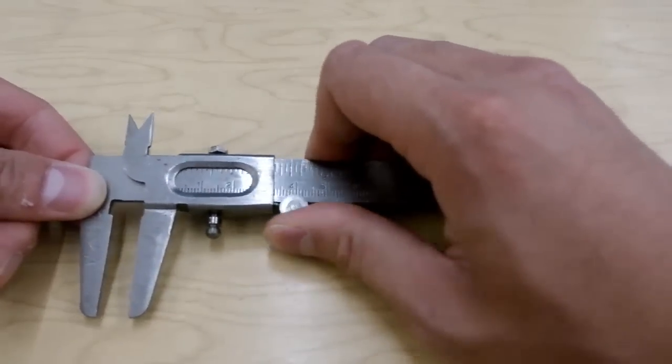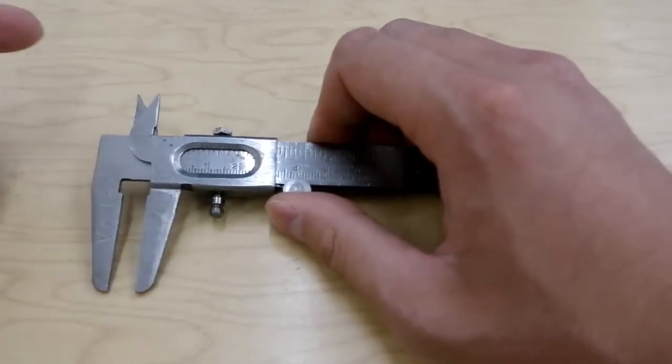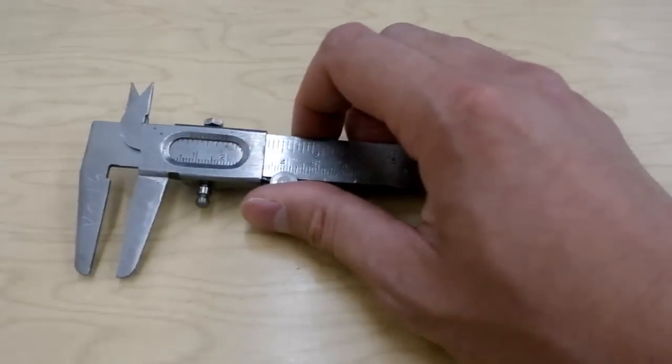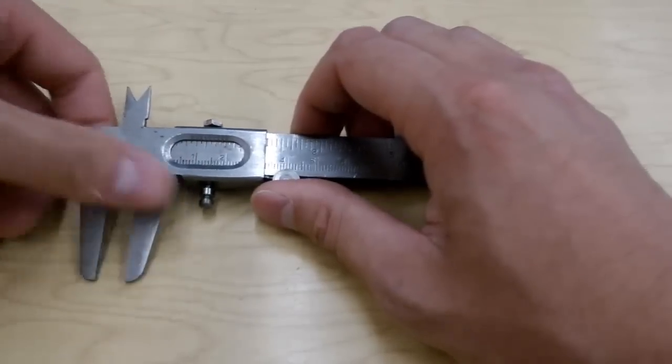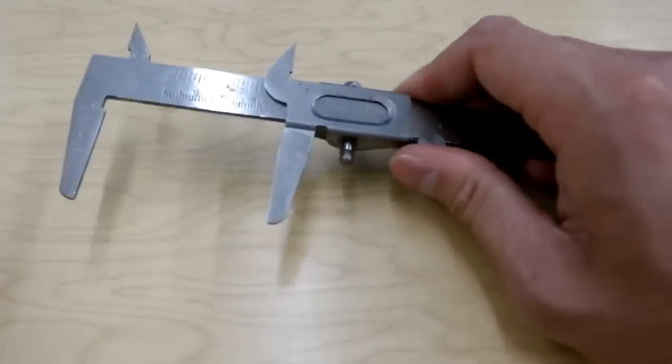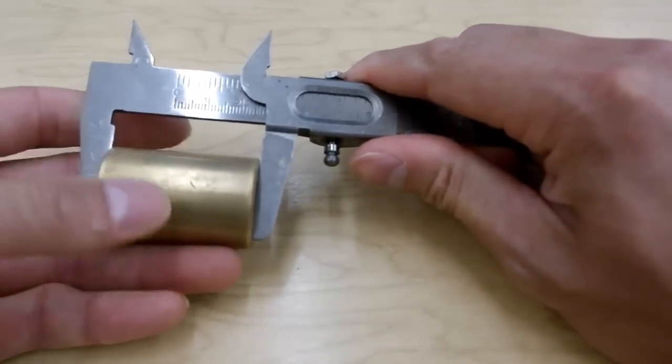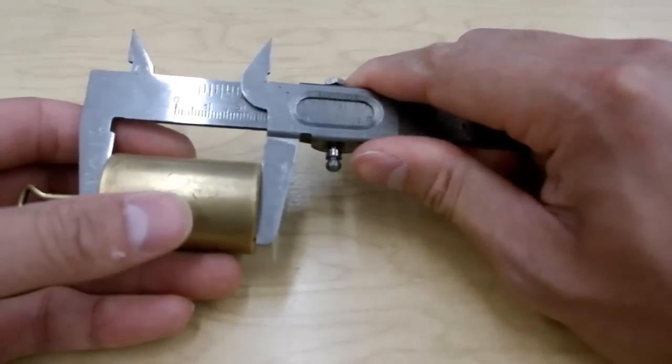Now as we move this back and forth, you notice there's a few things that move around, and it allows us to measure different things very quickly. This thing down here allows us to measure regular lengths or outer diameter, outer length of different objects.